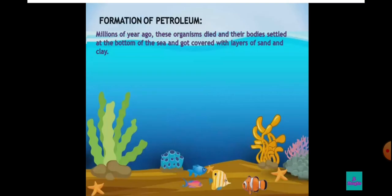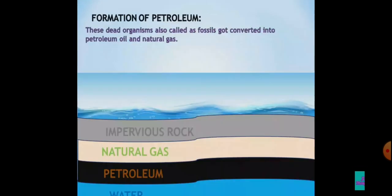Petroleum's formation also took place similarly to coal. When tiny plants and animals that lived inside the sea millions of years ago died, their remains sank to the seafloor. They got buried under mud for many years, and due to high temperature and pressure, the remains got converted into petroleum. It got collected in large underground pools called oil wells.